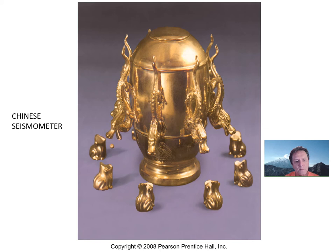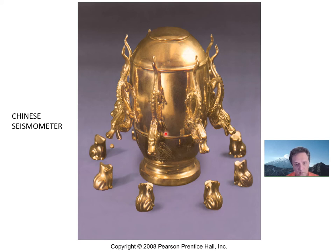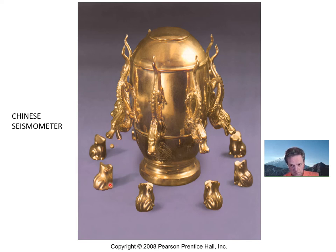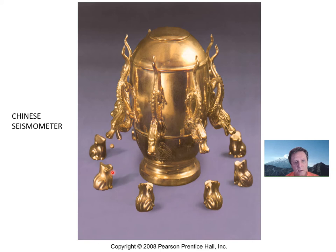How do we measure and detect earthquakes? This beautiful instrument is a seismometer invented by the Chinese centuries ago. Inside there is a triggering mechanism. When an earthquake occurs, the jar shakes back and forth, and the direction of shaking releases metal balls from the dragon's mouth, dropping into the frog's mouth. It gives a general sense of the direction of shaking, though it's not precise and doesn't give us a magnitude. But it tells you that an earthquake happened and gives an idea of the direction of earthquake energy propagation.